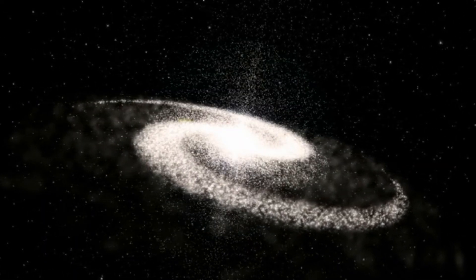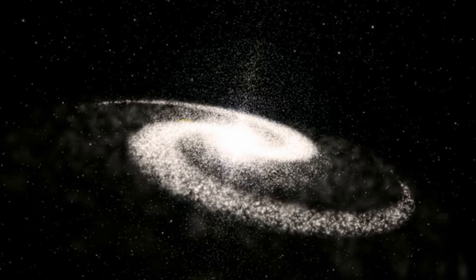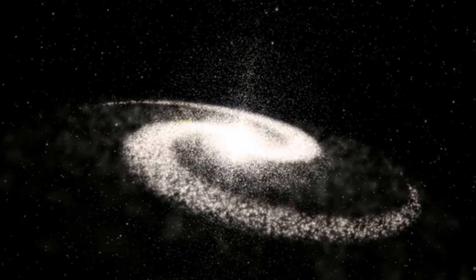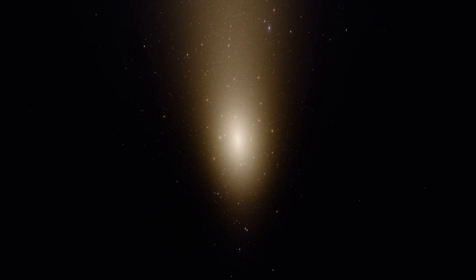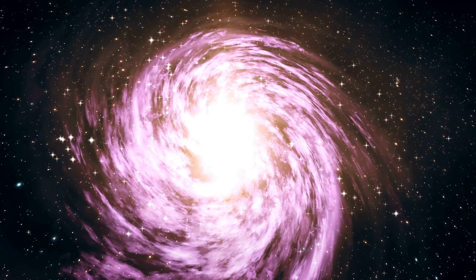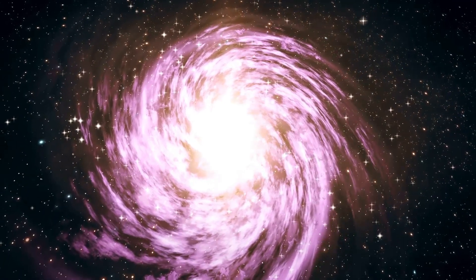In addition to gas giants, there are also Neptunian exoplanets, which have sizes similar to Uranus and Neptune. Among these are hot Neptunes and mini-Neptunes, which are smaller and closer to their host stars than their gas giant cousins. These planets are often shrouded in mystery, making their atmospheres difficult to study from afar.